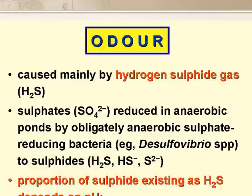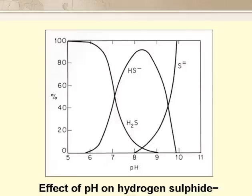So we need to understand odour. It's mainly caused by H2S, and this comes from the reduction of sulphates by the obligately anaerobic sulphate-reducing bacteria, such as Desulfovibrio species. These bacteria reduce sulphates to sulphides, and in aqueous solutions, sulphides are present as a mixture of dissolved H2S gas molecules, bisulphide ions HS⁻, and sulphide ions S²⁻, and the proportion of these three forms depends on the pH, as shown in this slide.